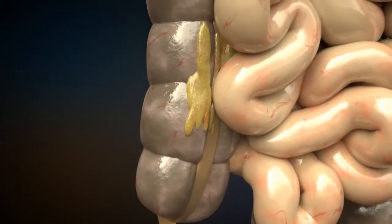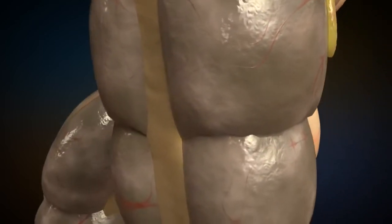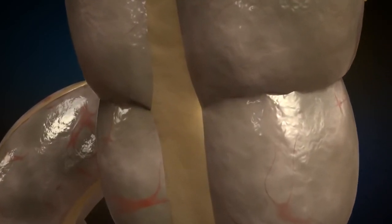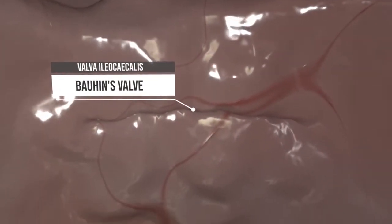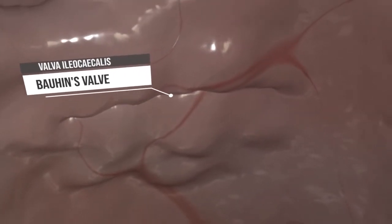The large intestine is thicker than the small intestine. It is about one meter long and surrounds the small intestine. The small intestine is connected to the large intestine via the Bauhin's valve. It opens when chyme is to pass from the small intestine to the large intestine.